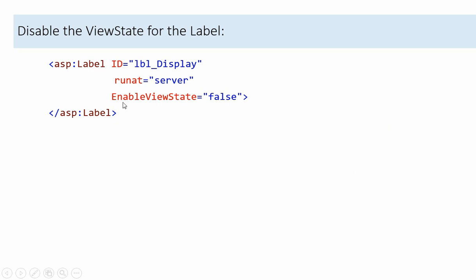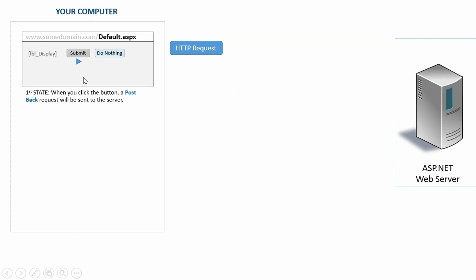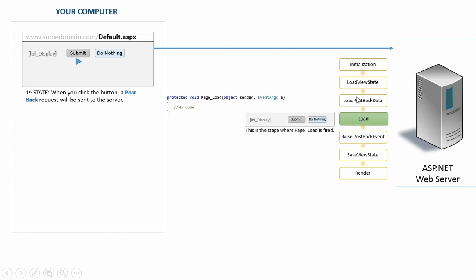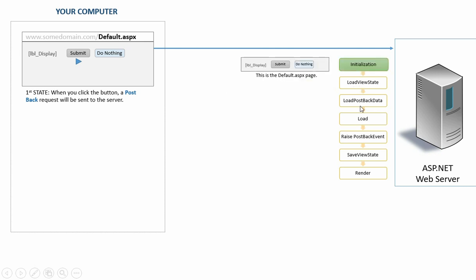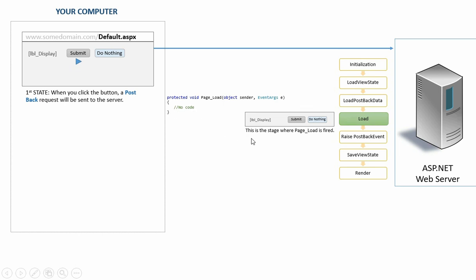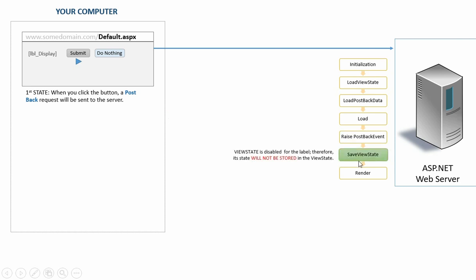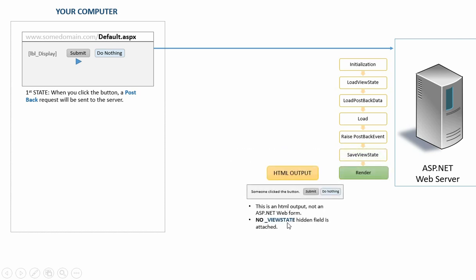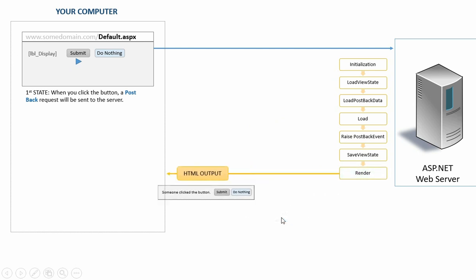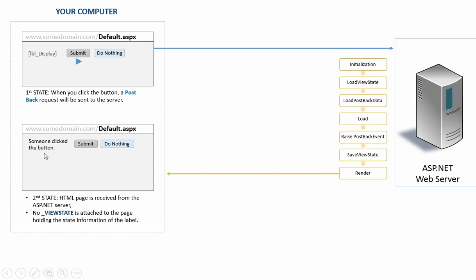We can actually disable ViewState for web controls. Let's try this for the label and see what happens. Let's add the enableViewState property for the label and set it to false, meaning ViewState is disabled for the label. Assuming the page is requested already and displayed in the browser, let's click the submit button. The page will be initialized and the following two stages will do nothing since there is no ViewState and postback data. Page load will do no changes as well. In the raise postback event stage, however, the button text will change to 'someone clicked the button.' The saveViewState stage will also do nothing since ViewState is disabled for the label. Therefore, the rendered HTML output will have no ViewState hidden field attached, and you will get 'someone clicked the button' displayed in the browser.